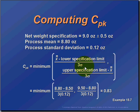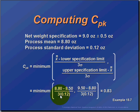So we'll take X-bar-bar, which is our process mean of 8.8, and subtract our lower specification limit, then divide by three sigma. We know that 8.8 is our average, and 8.5 — which is nine minus 0.5 — gives us our lower spec limit. We divide that by three times sigma (0.12), giving us 0.36. So: 8.8 minus 8.5 divided by 0.36. Our upper value is 9.5 minus 8.8 divided by 0.36.